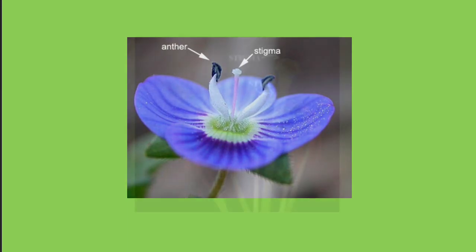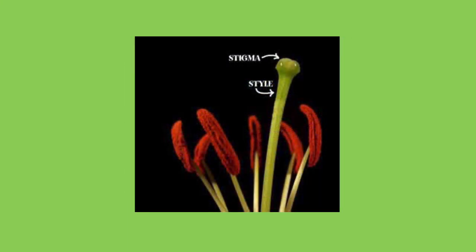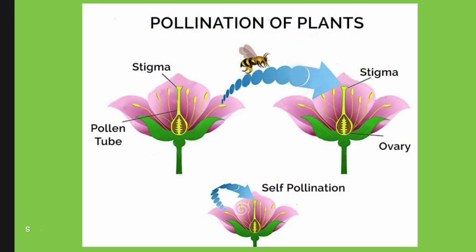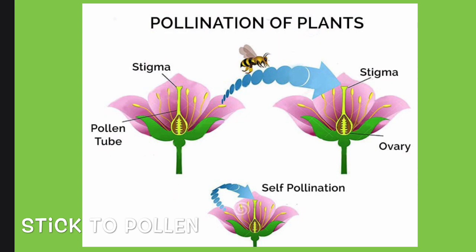The stigma is at the end of a long stalk called the style, and you can see that it looks a bit sticky — and it is. The reason the stigma is sticky is because its function is to stick to any pollen that gets brought its way.